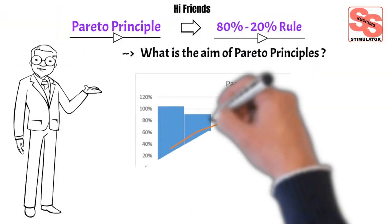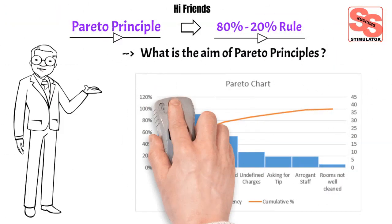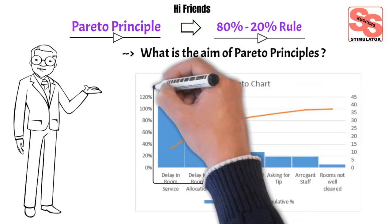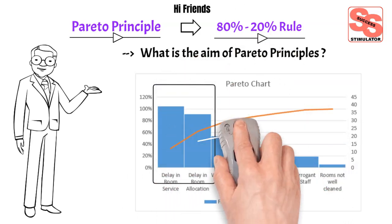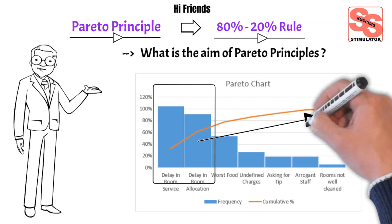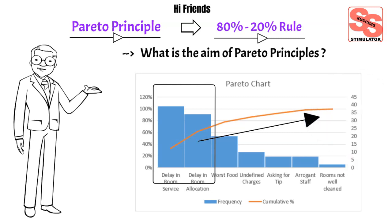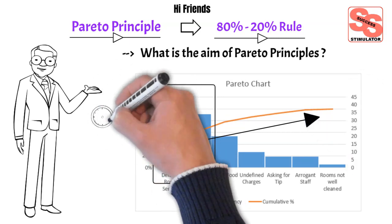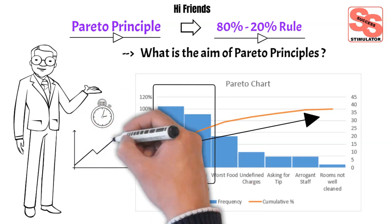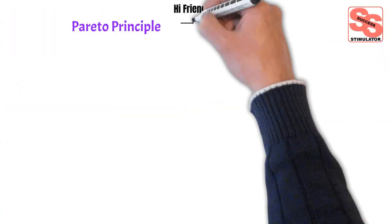What is the aim of Pareto Principles? The aim of Pareto Principles is to identify areas of focus in process improvement. It helps in analyzing data about the frequency of problems or causes in a process. Pareto Principles also mainly focuses on managing your time better and making it more productive.